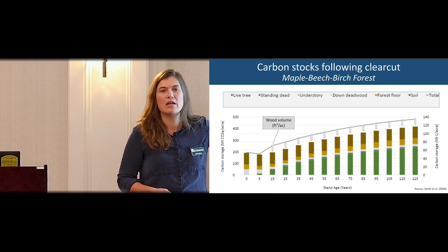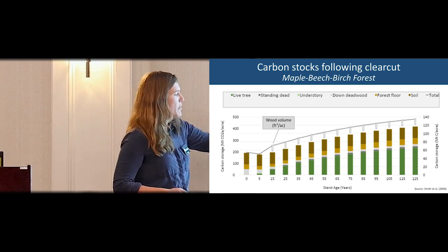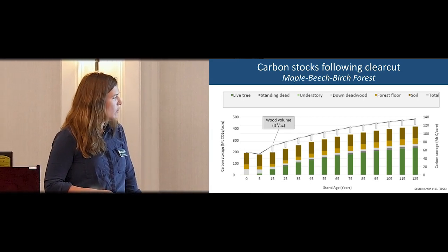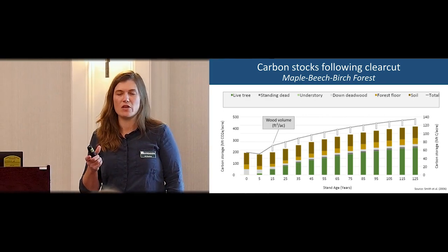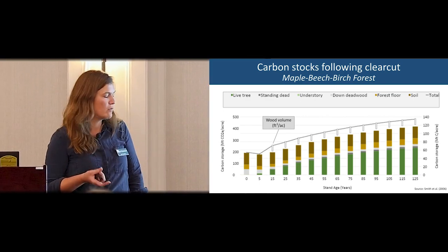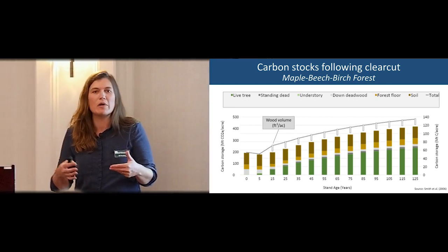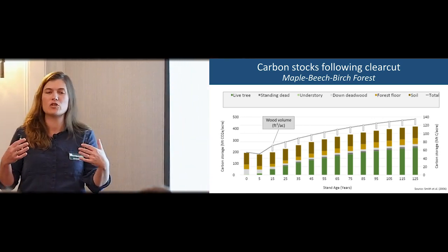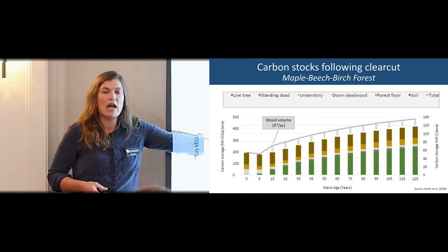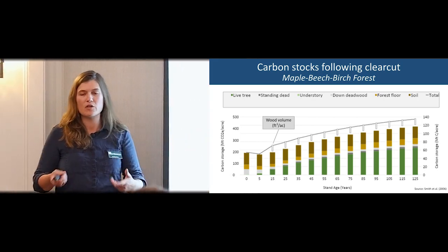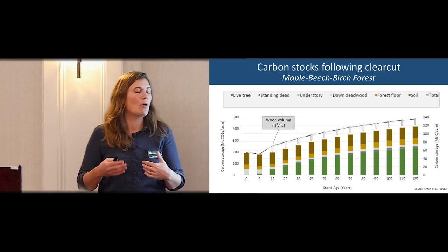Early in stand development, when all the live trees are gone from the site, we have carbon in our soil, leaf litter, and deadwood, but actually a decline in carbon storage in that first five years. Trees are growing but they're very small, so sequestration from live trees is too small to overcome what we see as decomposition of the other pools — decomposing faster than new carbon can be pulled into the site.